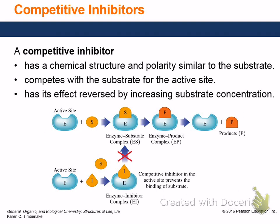Allosteric enzymes would fall into the category of non-competitive interaction because they come in from a different site and alter the substrate pocket. A competitive inhibitor doesn't have to be allosteric — it just goes straight in and blocks the active site.